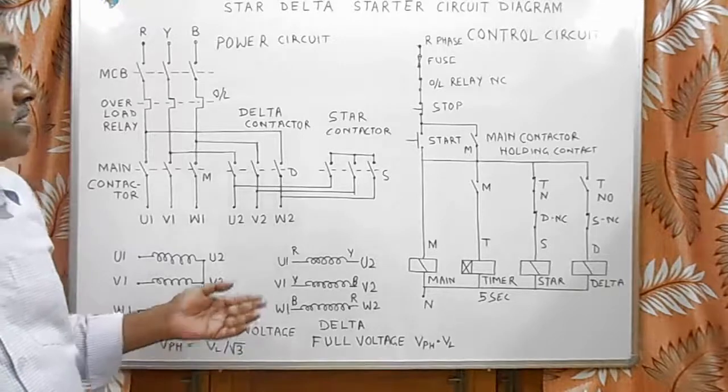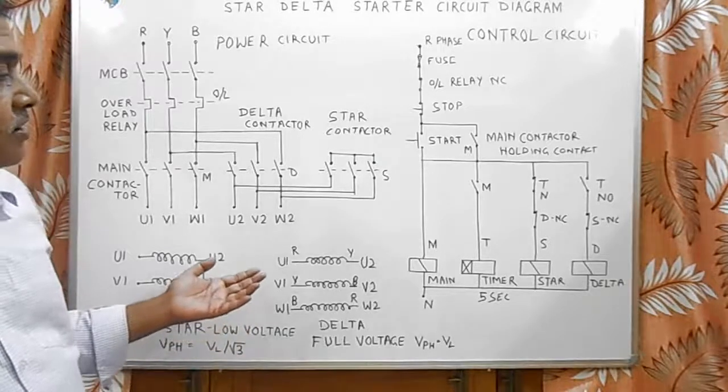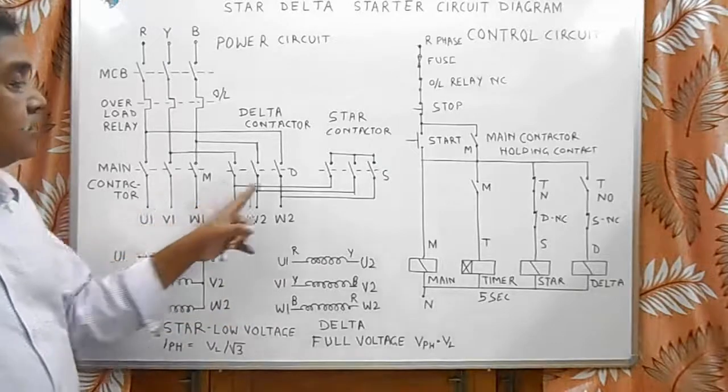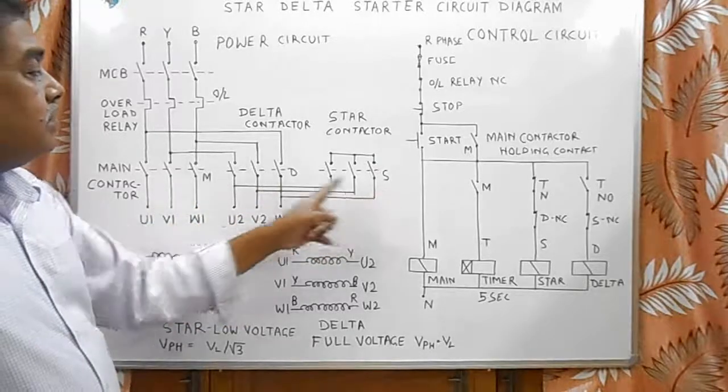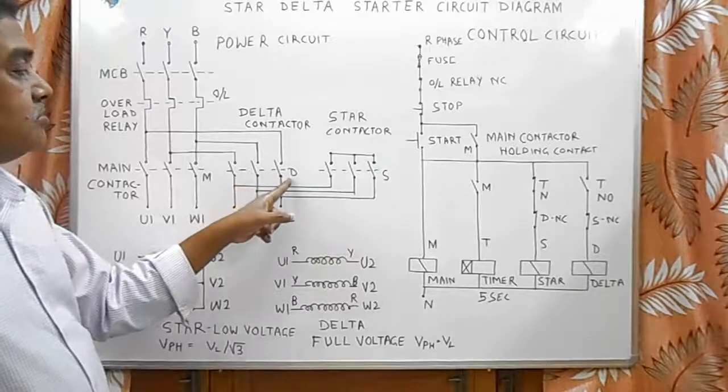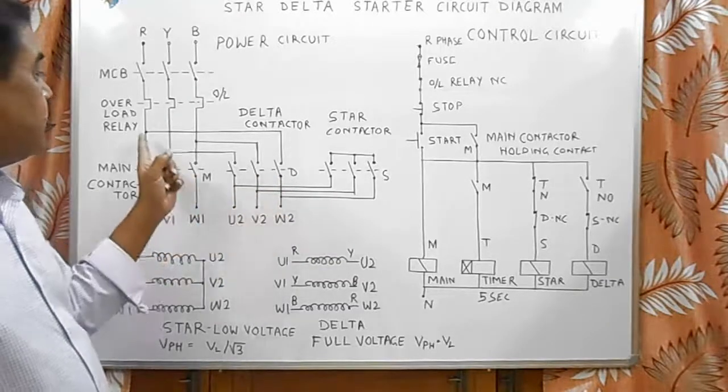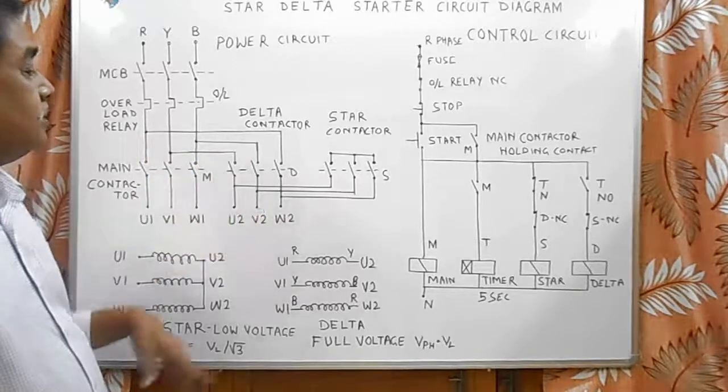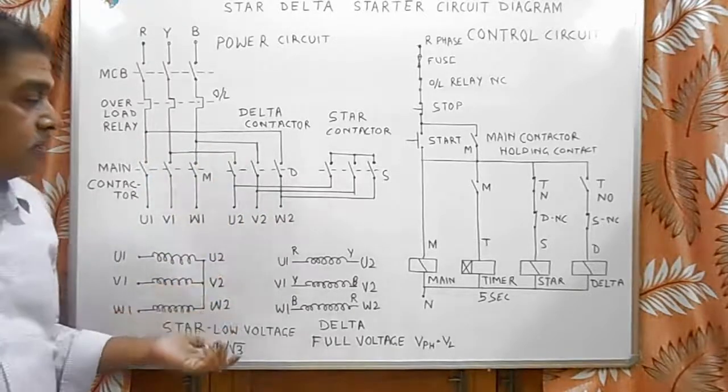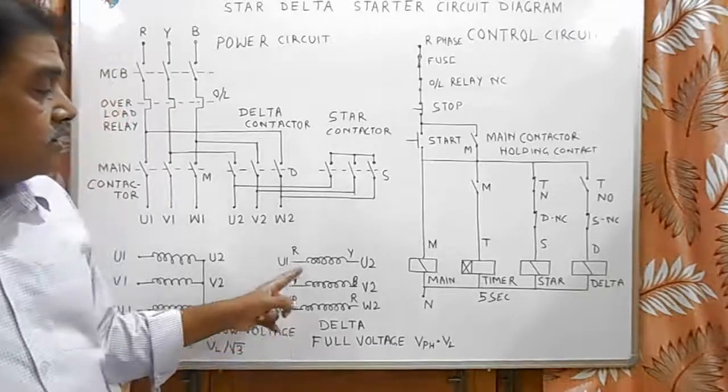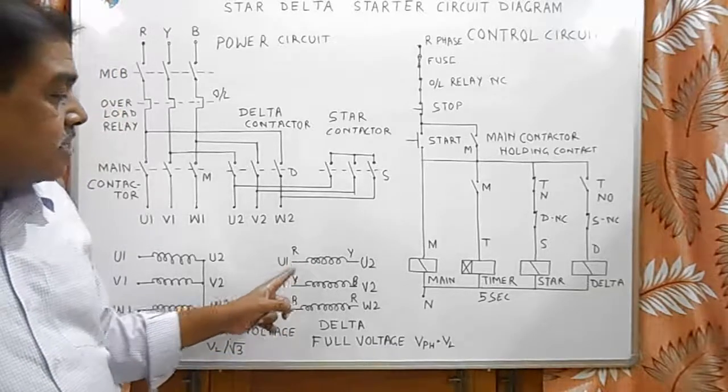After starting the motor at low voltage, when we want to run in delta, the star contactor is dropped and delta contactor is switched on so that U2, V2, and W2 receive supply. In that case, motor receives full voltage, meaning phase voltage equals line voltage.